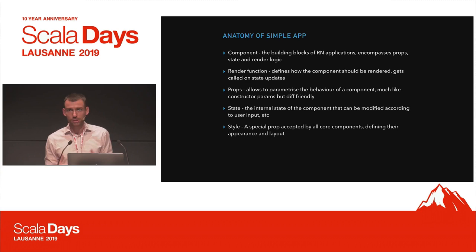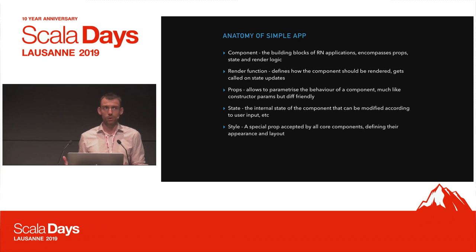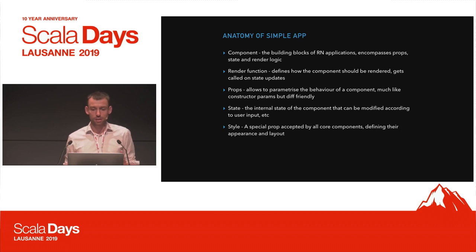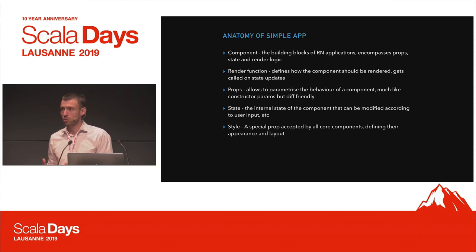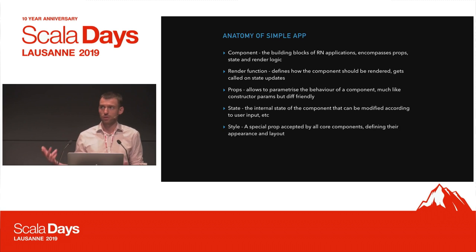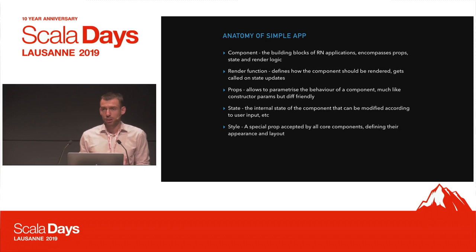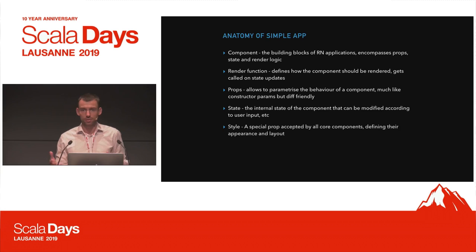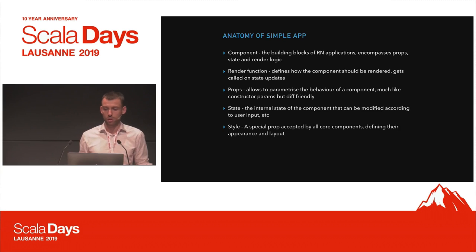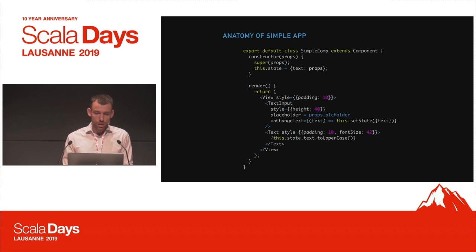State is the internal state of the component at any point — it can be mutated, unlike props, by input from the user and whatnot. Whenever that state is mutated, most of the time the result is reevaluation of the render function. You also have style, which is a special prop that most core components take and defines how your components look.